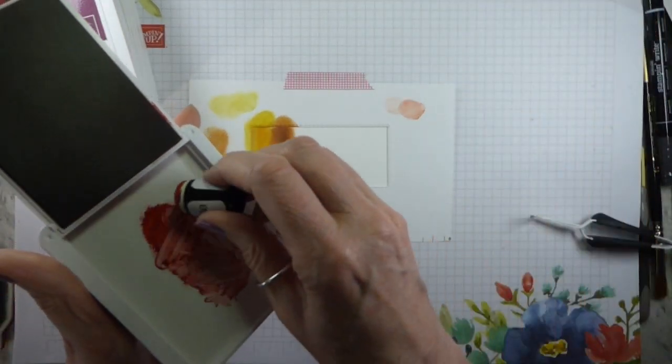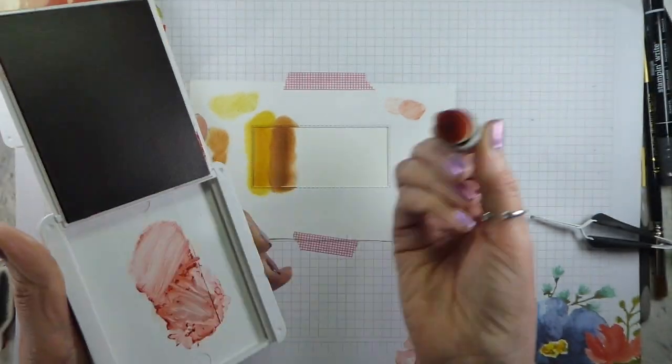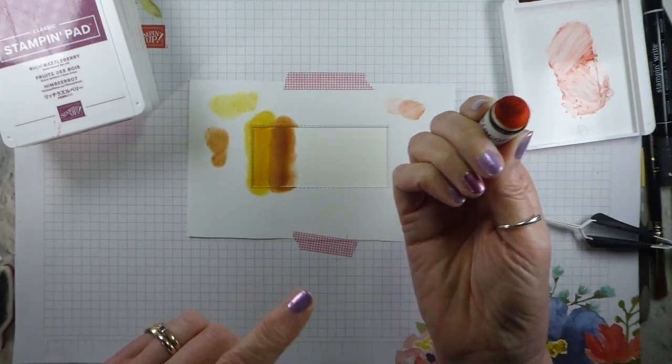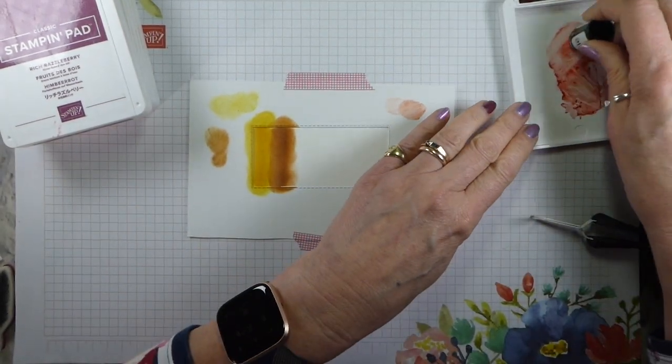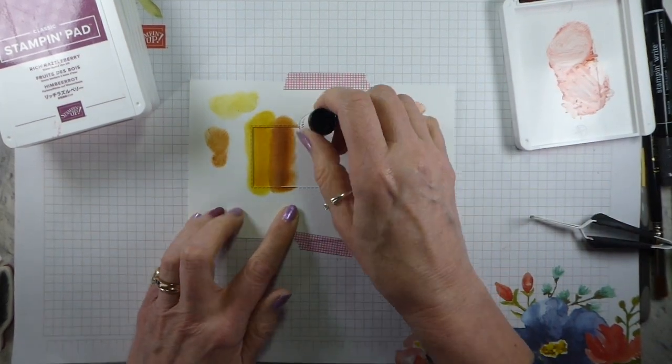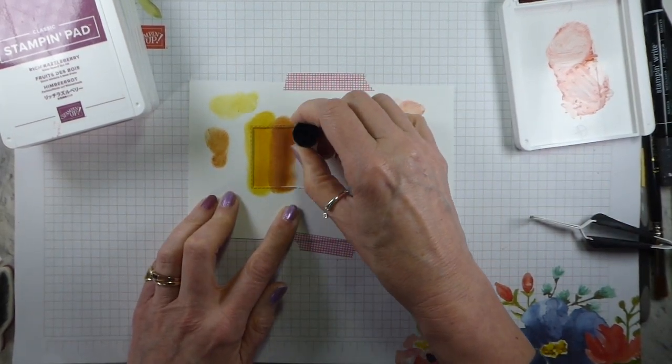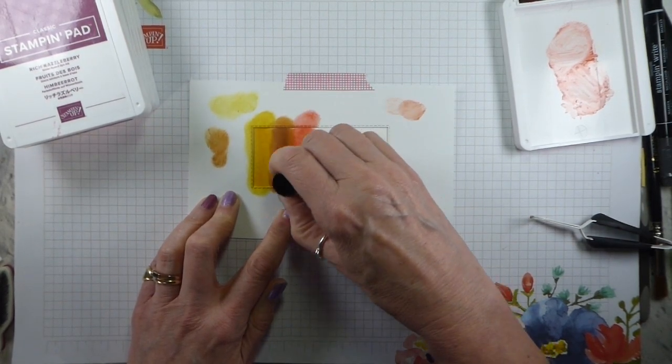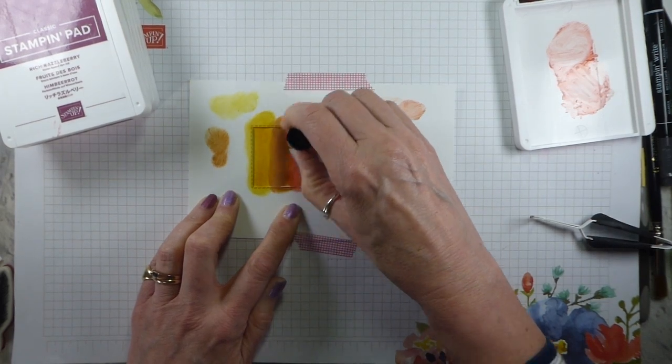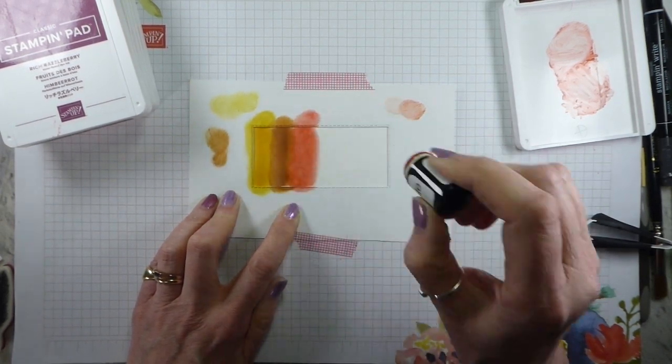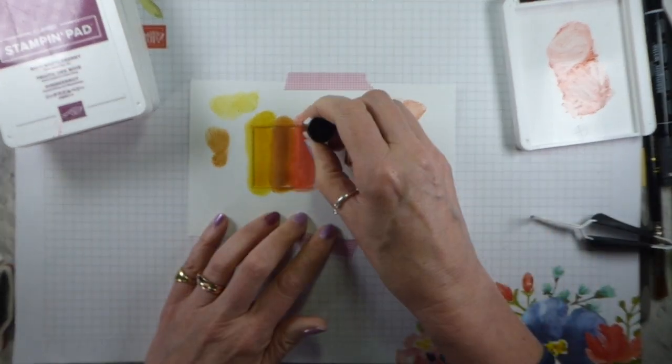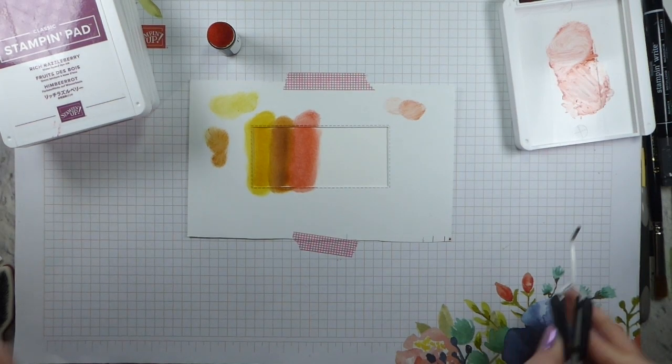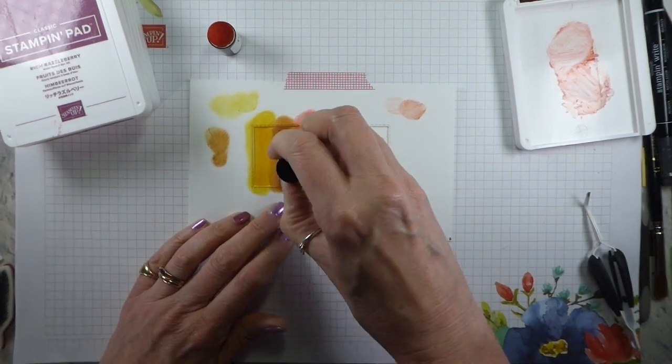I might actually just grab my Bumblebee back and just very gently go over the edge, as it were, just so that those two colors are reasonably well blended in. That's Bumblebee and Cinnamon Cider. The next color I need is Terracotta Tile, which again I already have a sponge dauber for, but I need to check - yep, that's got glycerin in. The glycerin basically kind of stays there.